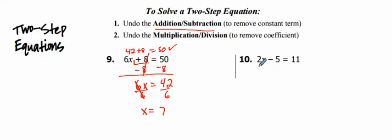All right, let's try this one. 2x minus 5 equals 11. So I'm going to work with my subtraction here first. So the opposite of subtracting 5 would be to add 5 to both sides.